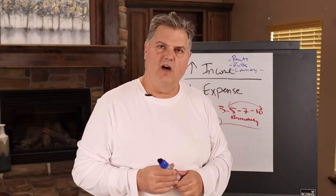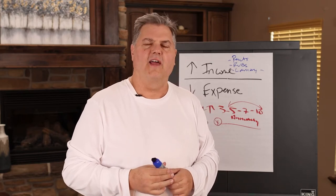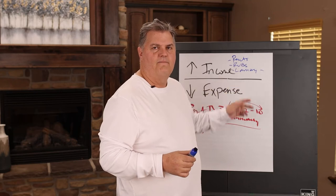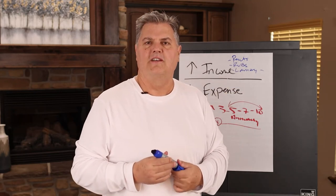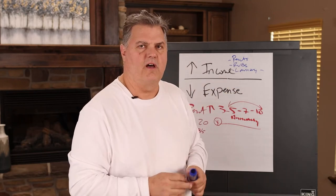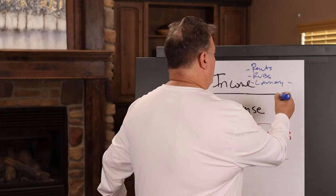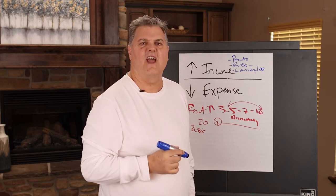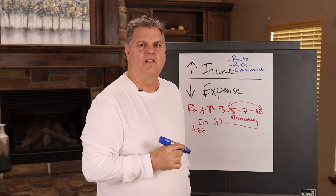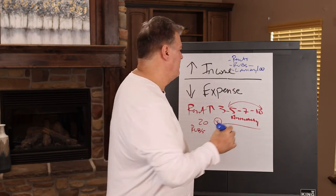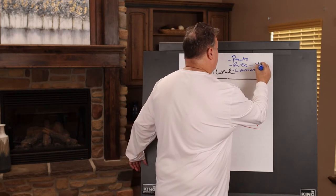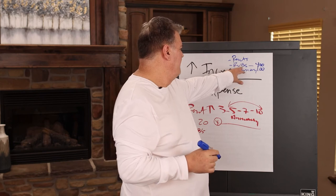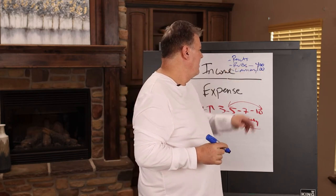For a smaller property like a four-plex or five-plex, adding paid laundry might give you an extra $75 to $100 a month — let's call it $100. And with RUBS, let's say that gives an extra $400 a month. So we've increased this property $400 on RUBS and $100 on laundry.